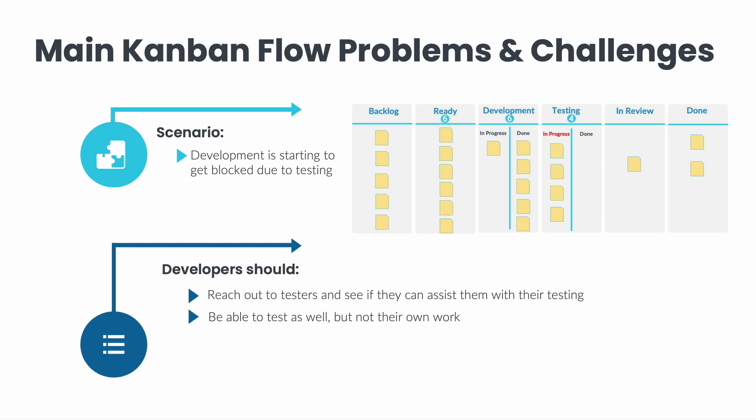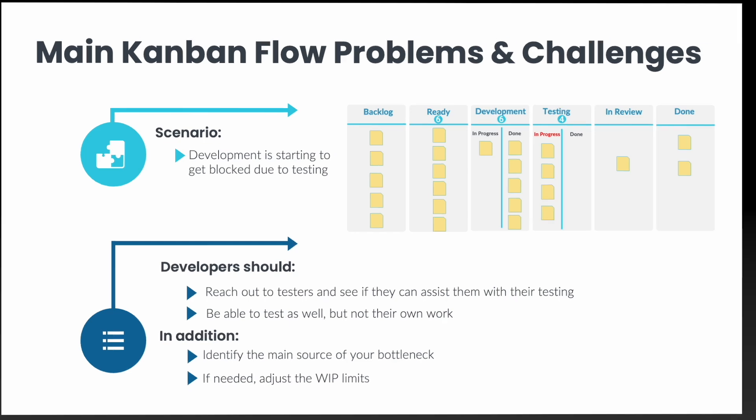Developers might not be excited to perform testing instead of development; however, keep in mind the goal is for the work items to flow smoothly through the Kanban and to minimize lots of in-progress work. This scenario should be an exception. If you find yourself in this scenario a lot, you should discuss with your team and identify the main source of your bottleneck. If needed, you can adjust the WIP limits, but make sure you understand the real source of your issue first.